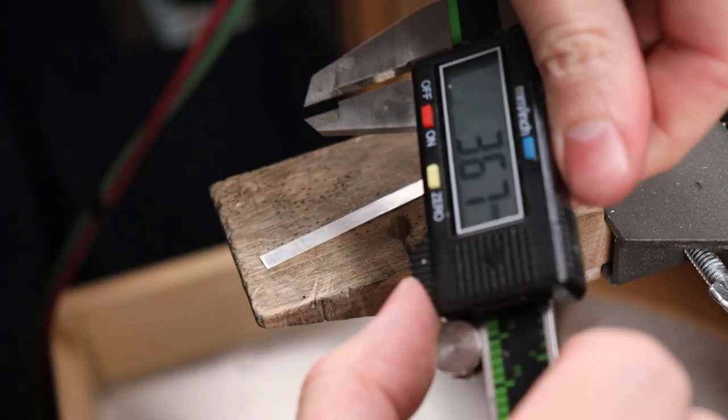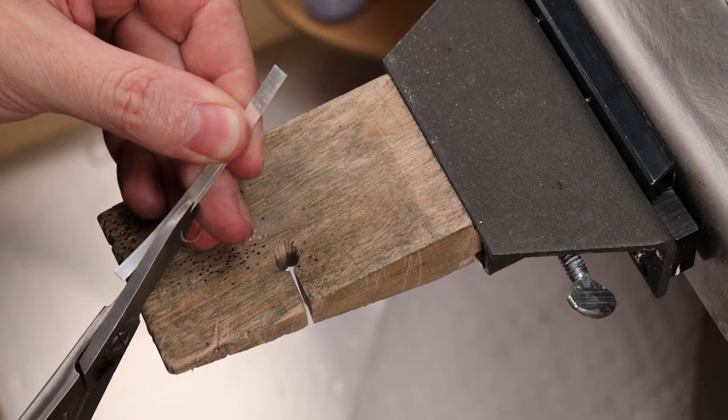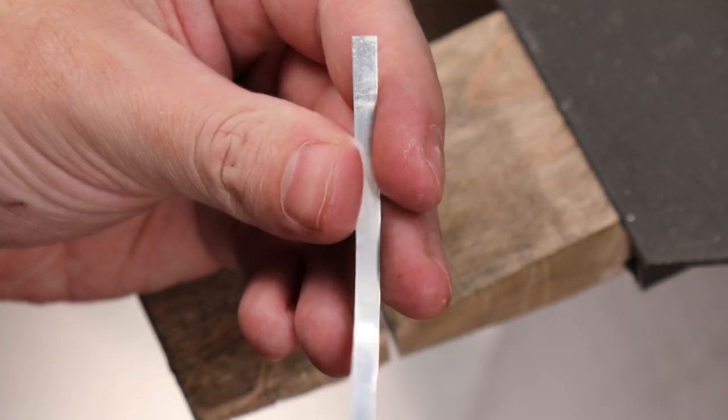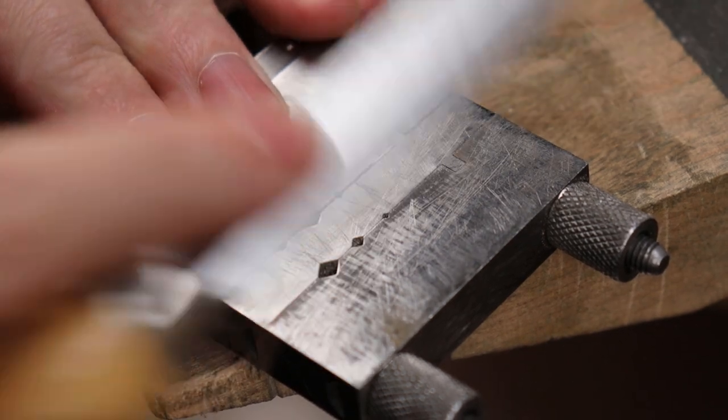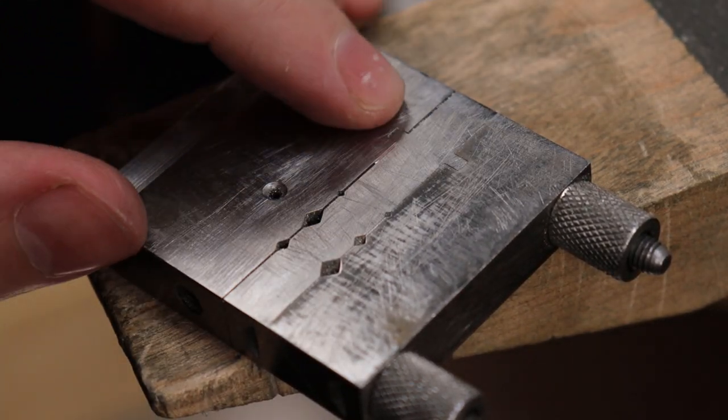This is easy enough to do using some calipers to measure your stone, mark it out on your metal, and then cut it out with some shears. Once you have everything to your liking, you're going to need to make your bezel ends as flat as possible. A miter cutting vise comes in really handy for this.